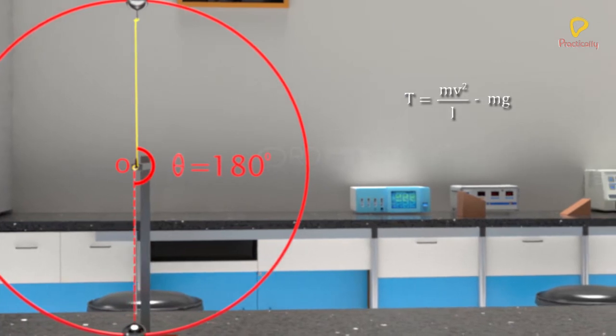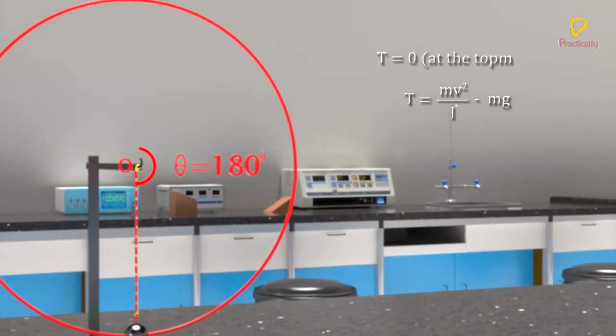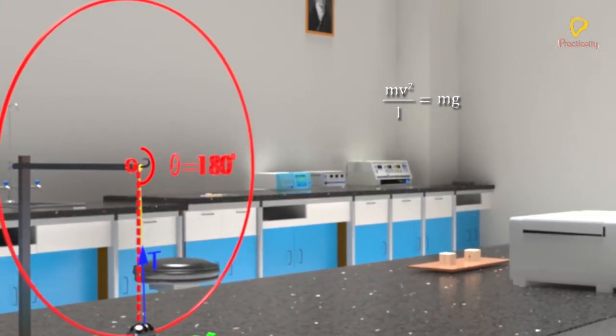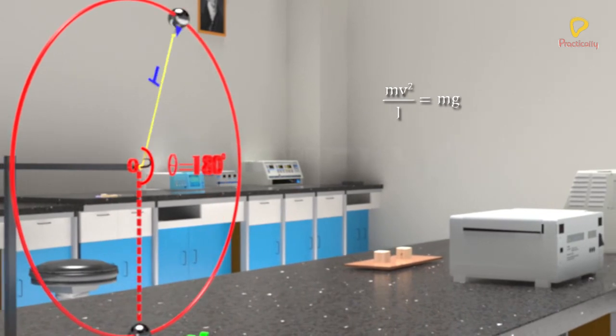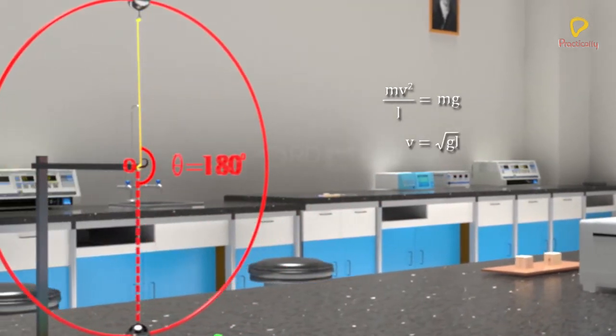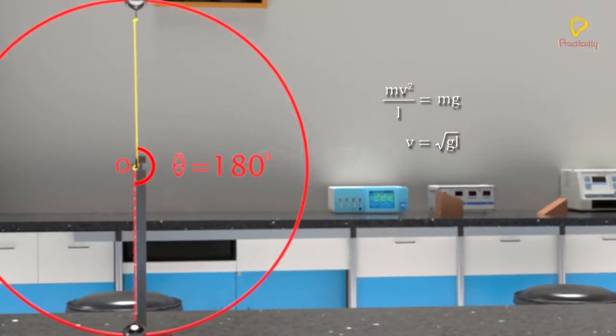If the initial speed is just sufficient to bring the bob to the highest point, tension in the string at this point is zero. Therefore, Mv square by L equals to Mg, which gives V equals to square root of gl. This is the minimum velocity the bob can have at the highest point.